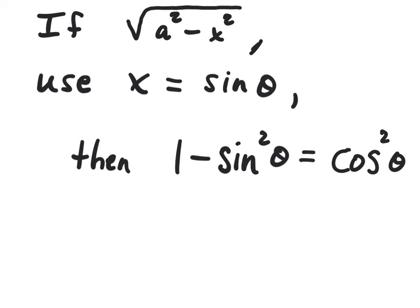Hey class, we're going to look at our first example of a trig substitution integral. If your original problem has a radical of the form a squared minus x squared, where a is a constant, then your trig sub is going to be x equals a sine theta. You'll use the Pythagorean identity 1 minus sine squared theta equals cosine squared theta.